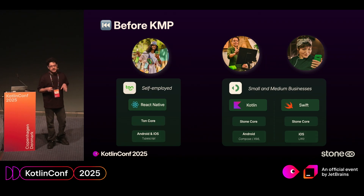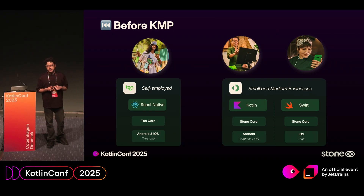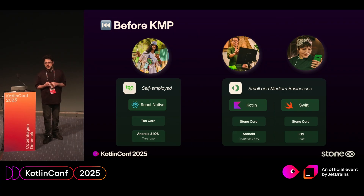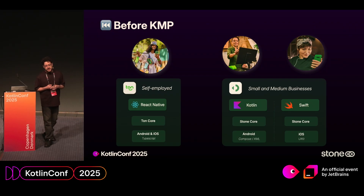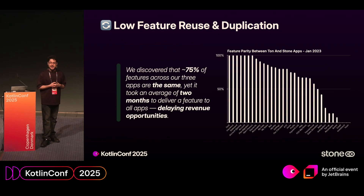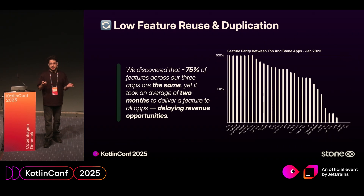Each of these applications is meant for specific user segments and built using different technologies. The Tone app is built using React Native with its own core modules, built in the UI using TypeScript. The Stone app is meant for small and medium businesses, with two different repos — one in Kotlin and another in Swift — with its own core modules. On Android it was built using Compose and XML, and on iOS using UIKit. After a while, we realized that over 75% of the features were the same across these three applications, and it took us on average two months to deliver a single feature for all of them.